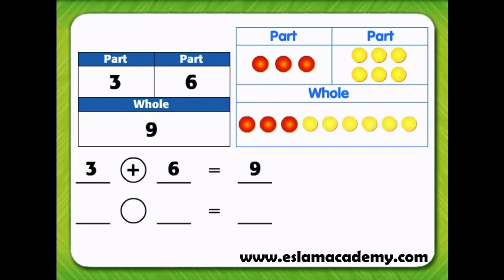To subtract, start with the whole, which is 9, and take one part away. Take away 3. That leaves 6, which is the other part. Now write the subtraction fact: 9 minus 3 equals 6.